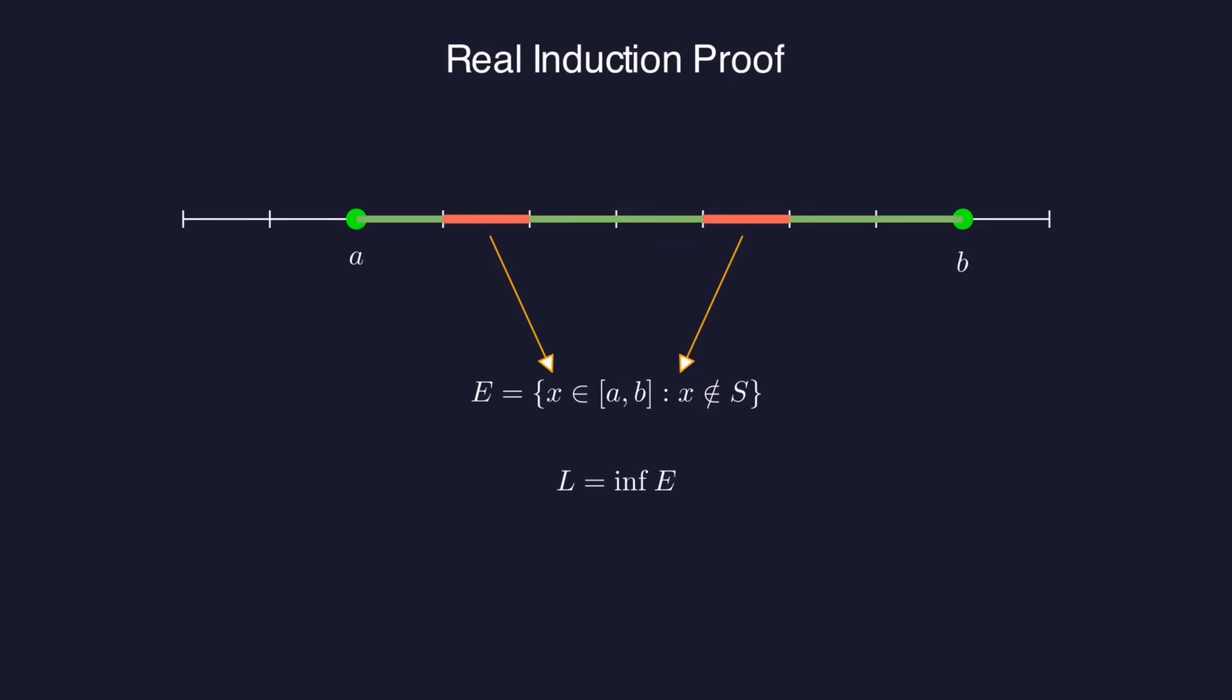Now we were assuming that E is non-empty and is bounded below by A, so it's perfectly valid to take the infimum of E and call it big L. But we have two cases to consider. One possibility is that L is actually a member of E, that is E contains its infimum.